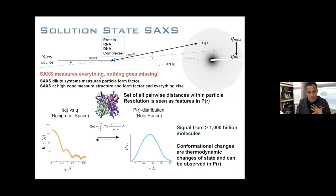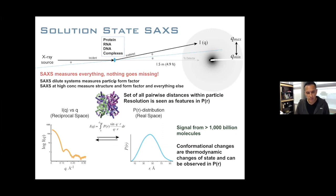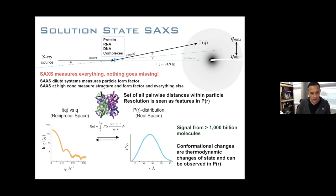The reason we like size exclusion chromatography SAXS so much is that it takes a lot of the buffer mismatching problem out of the equation. Normally in bio-SAXS we work at dilute conditions, where we measure what we call the particle form factor — the scattering due to the shape of the particle and not how particles are interacting with each other. At really high concentrations you might see a structure factor from particle-particle correlations.